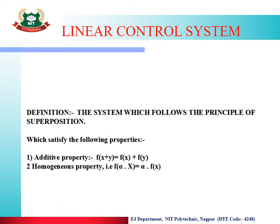The linear control system follows the principle of superposition, which satisfies two properties: the first is additive property and the second is homogenous property. Additive property means that 3+5 and 5+3 both give the same result — the function can be divided into two variables and the result remains the same. Homogenous property means that the function of alpha times x can be written as alpha times the function of x — the constant parameter can be taken out. Any system that follows both these properties is called a linear control system.